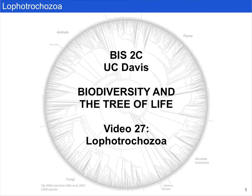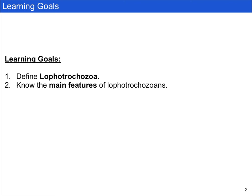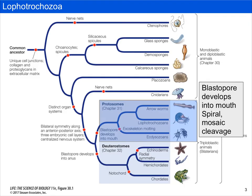Here we're going to briefly introduce the Lofotrochozoa. First and foremost we want you to be able to define Lofotrochozoa and then make a list of their main features. This is Lofotrochozoans as a whole, so this is a relatively brief overview and we're going to go into more detail into specific groups in future lectures.